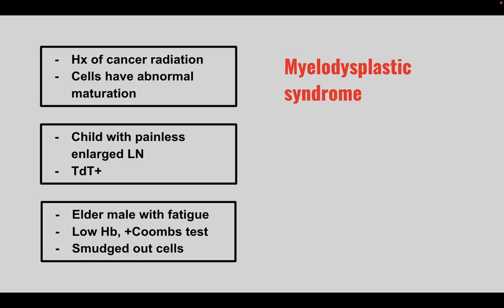Next is a child with painless enlarged lymph nodes and TdT positive cells. This is ALL. Remember, ALL is lymphocytic so cells can be B cells or T cells. If it's TdT positive, CD3 and CD7 positive, it tends to be T cell related. If it's CD19 and CD20 positive, it's B cell related.